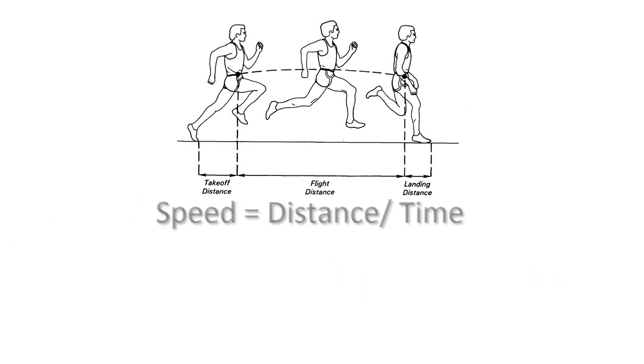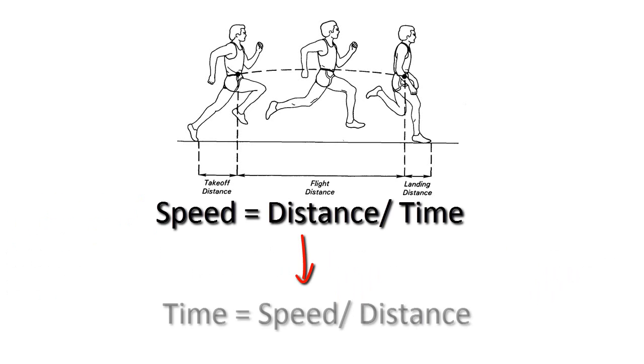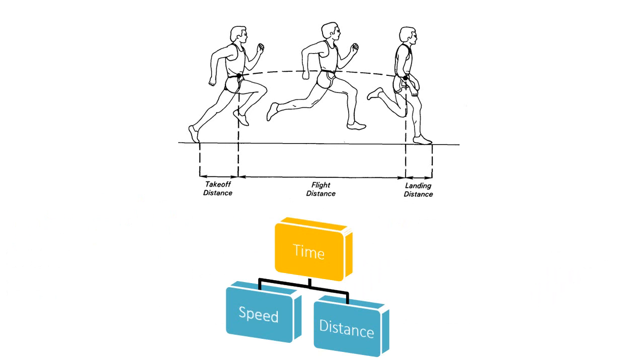Now this equation can be manipulated to isolate time, and we see that time in this scenario is equal to speed divided by distance. So time is at the top of the deterministic model because that is the result that we want to minimize.